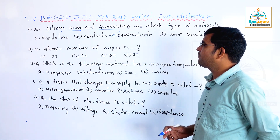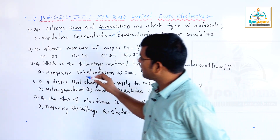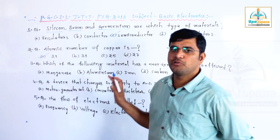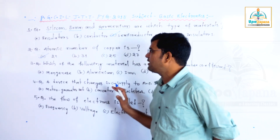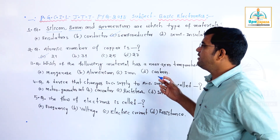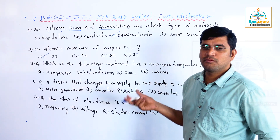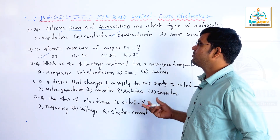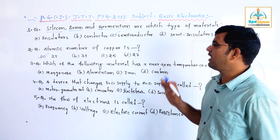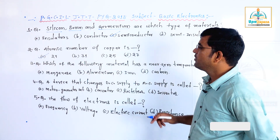Second question: atomic number of copper is what? It is 29. In this question, you don't need any calculations — every element has a fixed atomic number and mass number for copper that is very standard. Option A is 29.